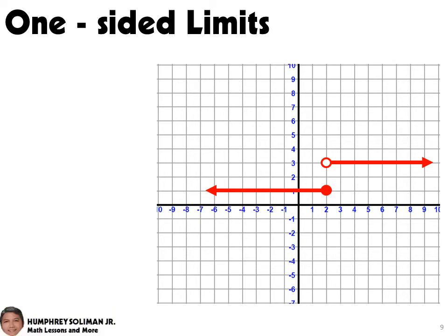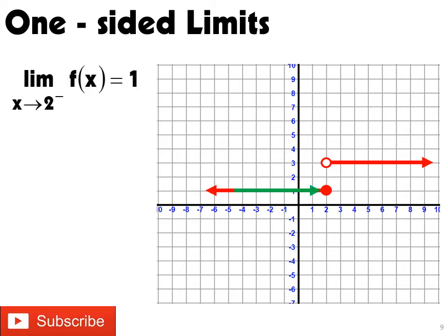If we will trace the graph from the left towards x equals 2, we can see that f of x is equal to 1. This is the limit of the function as x approaches 2 from the left, as indicated by the negative sign beside the 2.